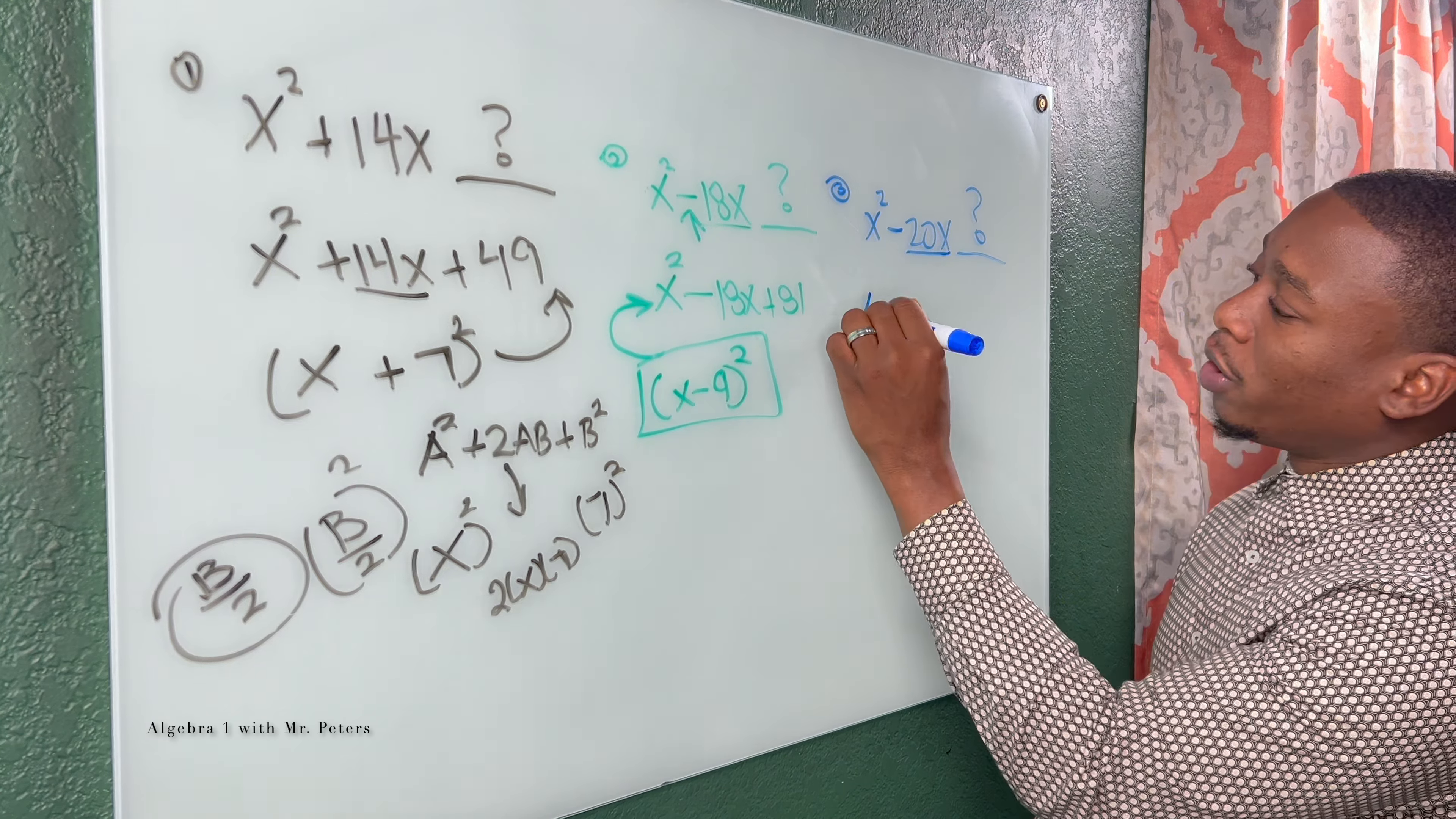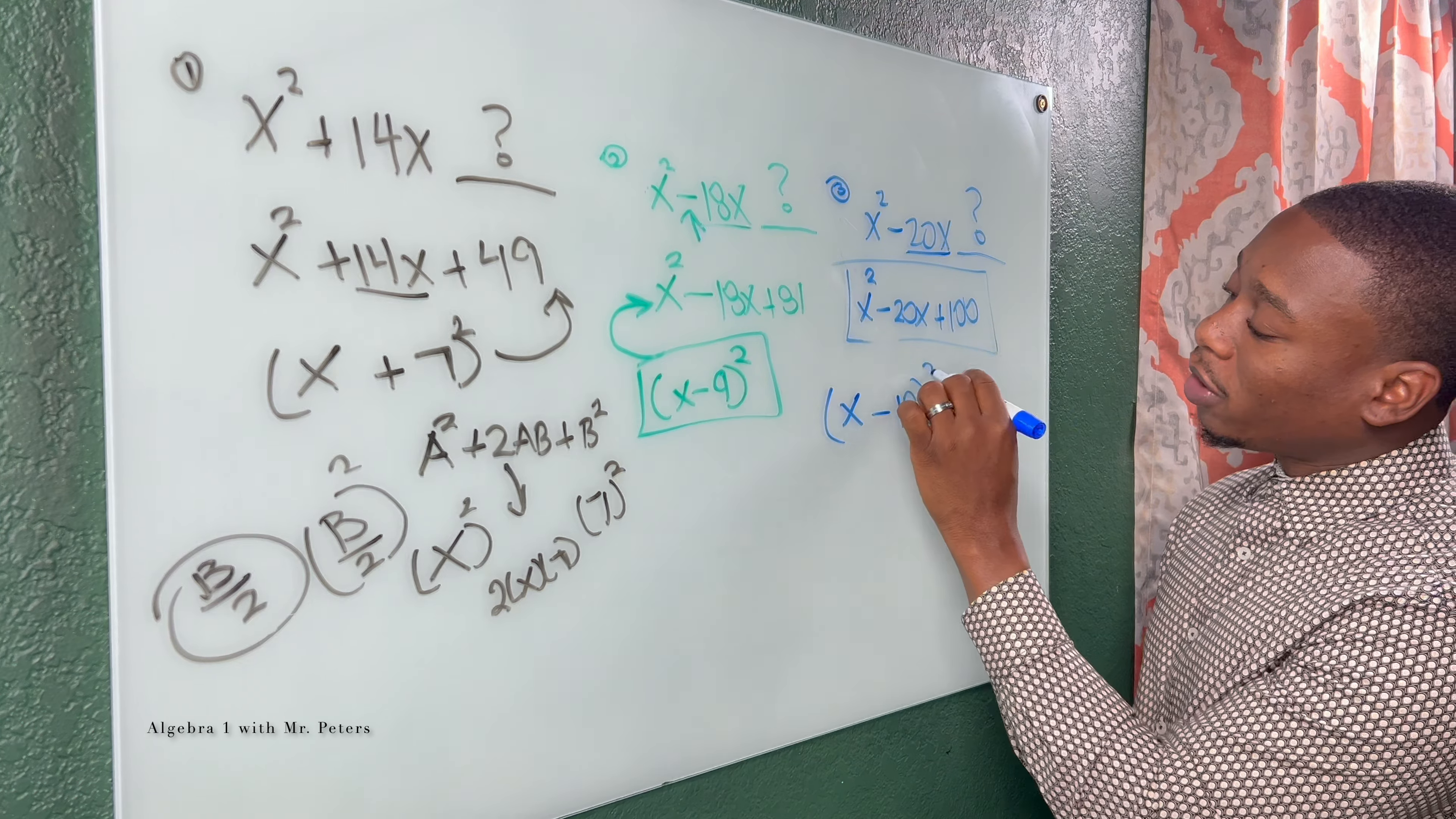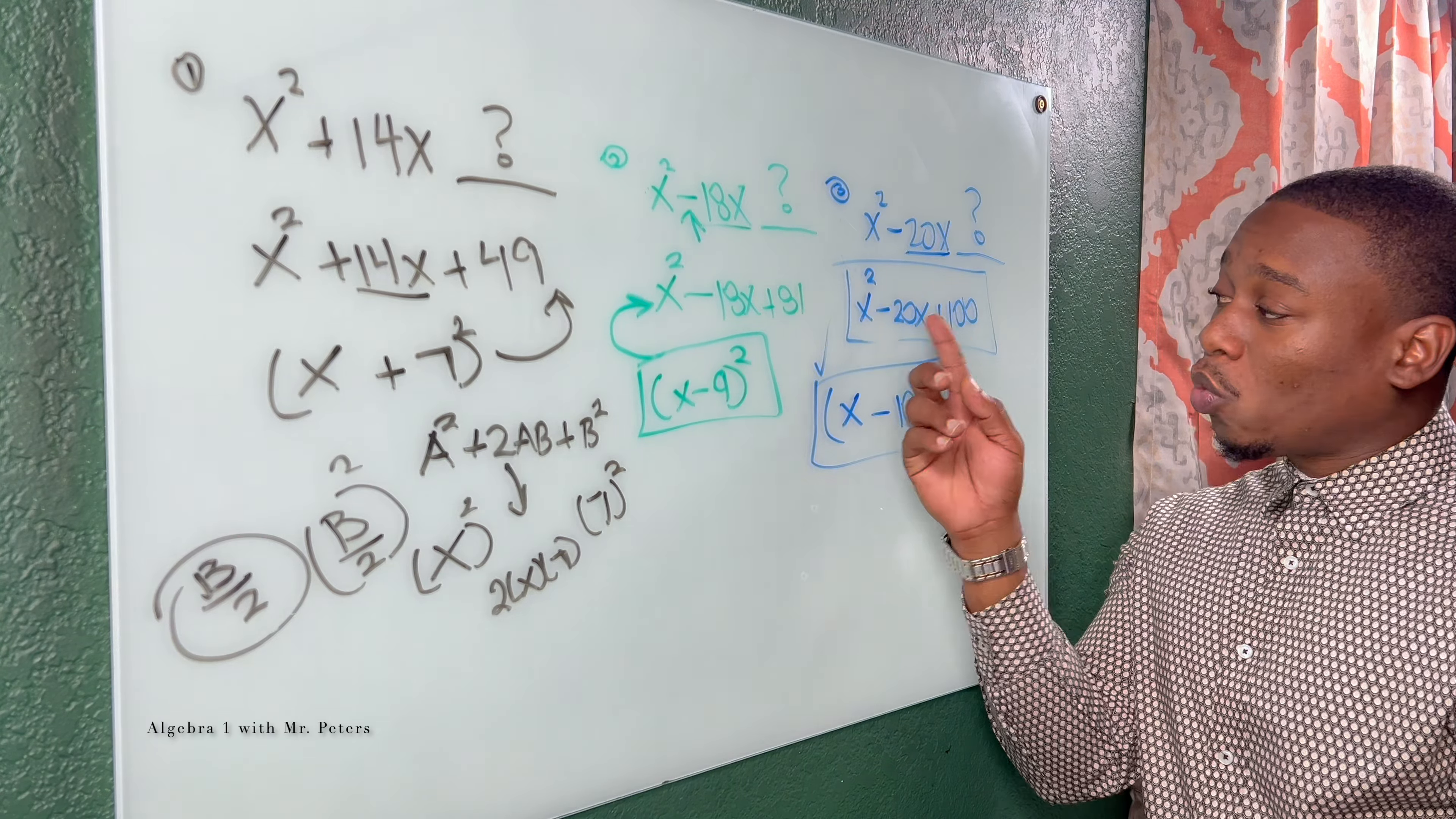If I want to know the binomial that gave me that perfect square trinomial, we're going to take b and just divide by 2. So now we have x and half of 20 is 10. Close our parentheses, put our exponent, and we know x minus 10 squared is what's going to give us this trinomial.